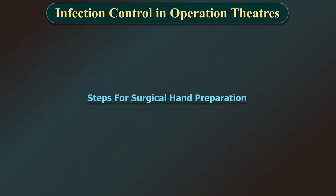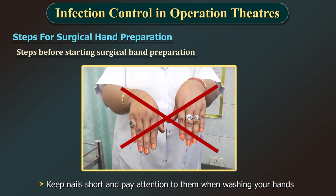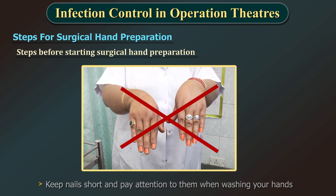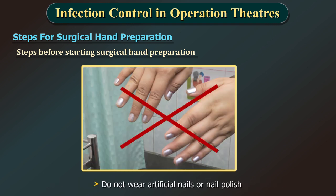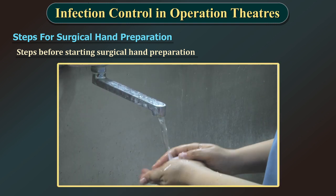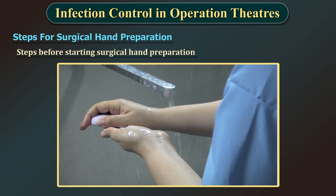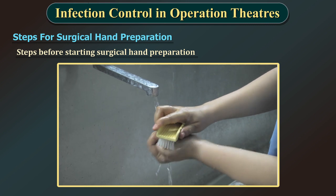Before starting surgical hand preparation: keep nails short and pay attention to them when washing your hands, as most microbes on hands come from beneath the fingernails. Do not wear artificial nails or nail polish. Remove all jewellery including rings, watches and bracelets before entering the operating room. Wash hands with a non-medicated soap before entering the operating room. Always use a brush for cleaning hands if visibly soiled.